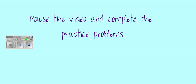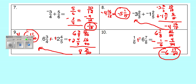Now pause the video and do the practice problems at the bottom, then unpause to check your answers. Here are the answers: number seven is one-twelfth; number eight is negative five and one-fifteenth; number nine is nine and eleven-twentieths; and number ten is negative six and seven twenty-fourths. Write down any questions you have for tomorrow so we can go over them in class. We're going to be working a couple of days with adding, subtracting, multiplying, and dividing fractions with negatives — it takes some practice time. Thank you for doing your homework and have a good night!